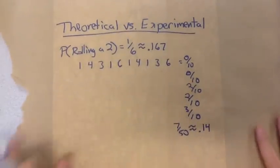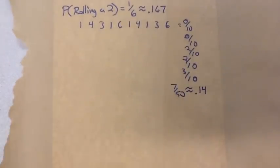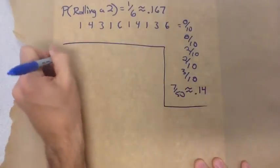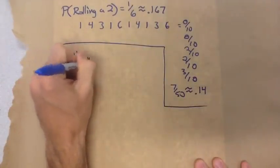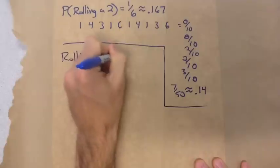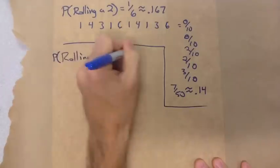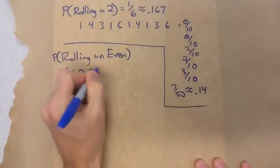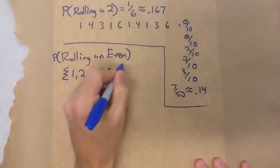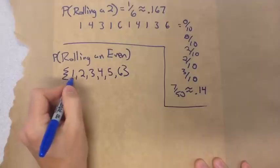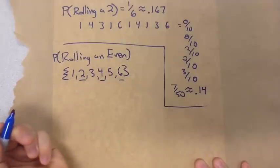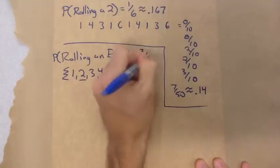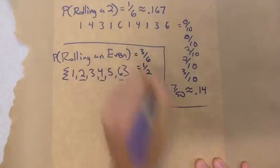Let's take another scenario. What if we look at rolling an even? If we look at our sample space, there are actually three different possibilities, so the probability is three out of six, or one-half.